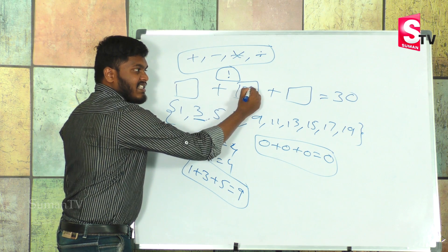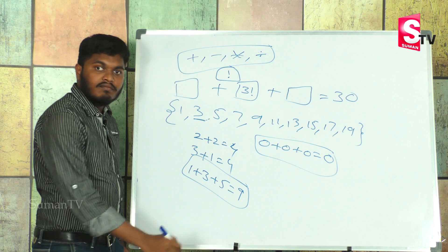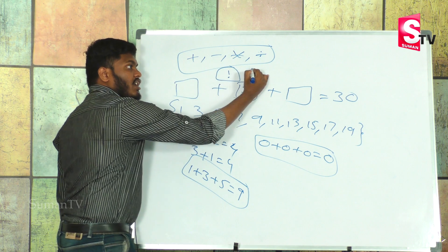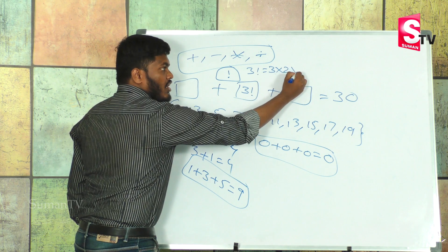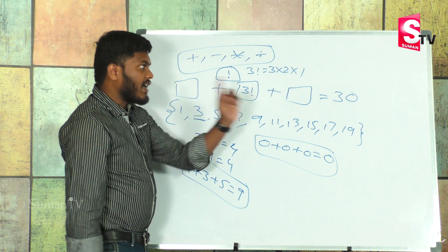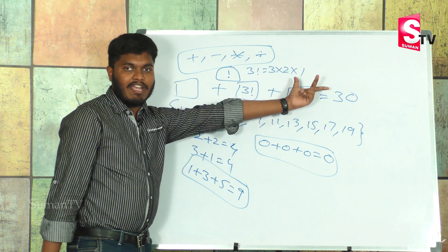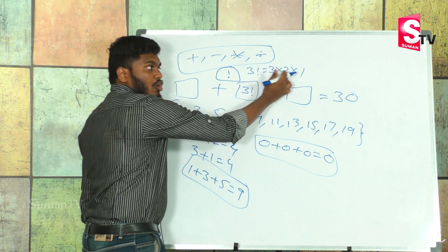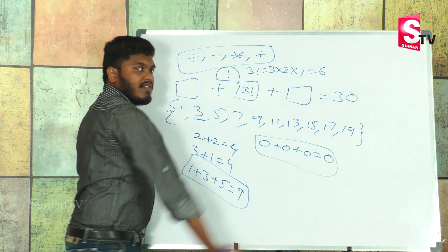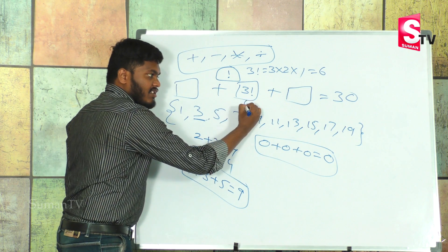3 factorial: we calculate 3 times 2 times 1. In factorial, we multiply that number down to 1. 3 × 2 × 1 equals 6. The answer is 6.